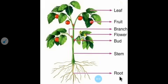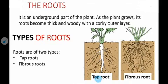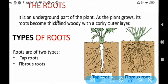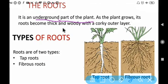So students, in this chapter we are going to study in detail about the root. The root is an underground part of the plant. Underground means which is inside the ground. As the plant grows, its roots become thick and woody with a corky outer layer.